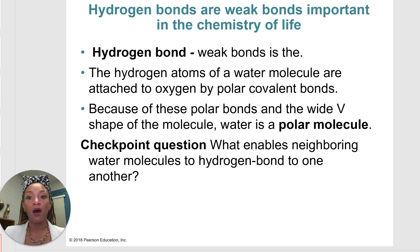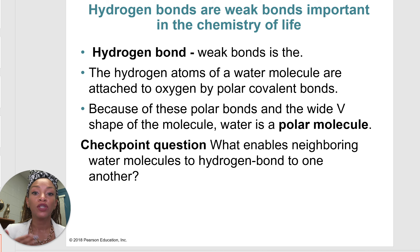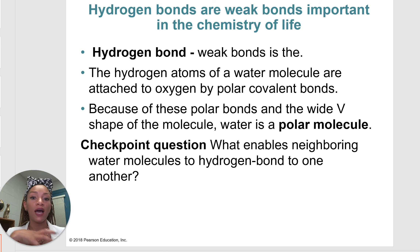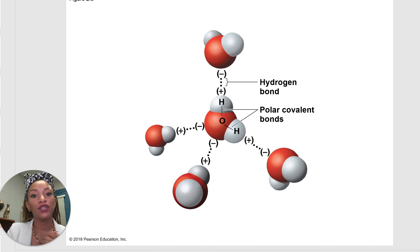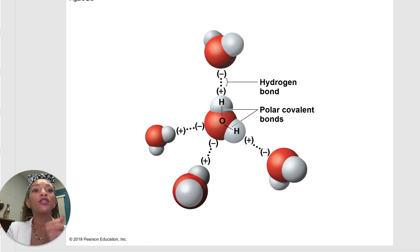Next, let's go over hydrogen bonds. This is a weak bond. The hydrogen atoms of a water molecule are attached to oxygen by those polar covalent bonds we talked about — unequal sharing. Because of these polar bonds and the V-shape of the molecule, water is a polar molecule, meaning it has a positive and a negative charge. We get a slightly negative charge on oxygen and slightly positive charges on hydrogen. Hydrogen bonds form between different water molecules — the oxygen and hydrogen ions between H2O molecules form those polar covalent bonds, and then hydrogen bonds connect the different water molecules to each other.